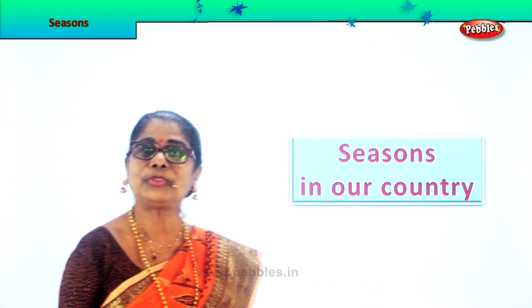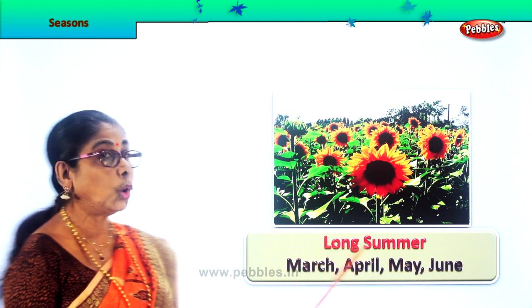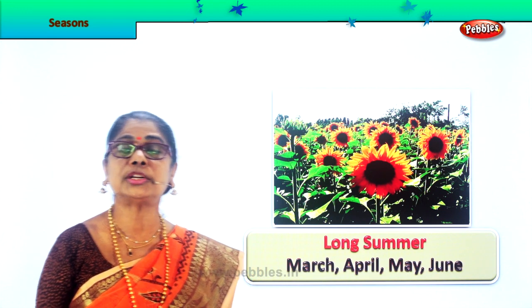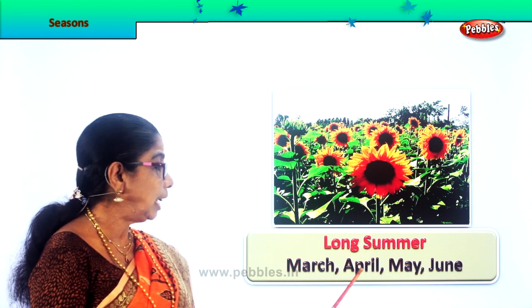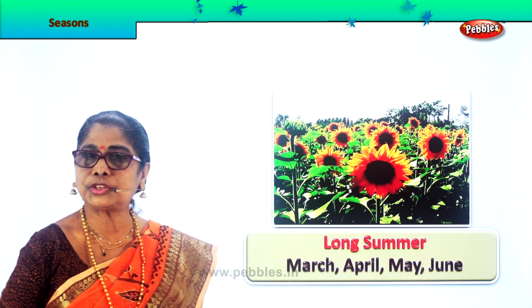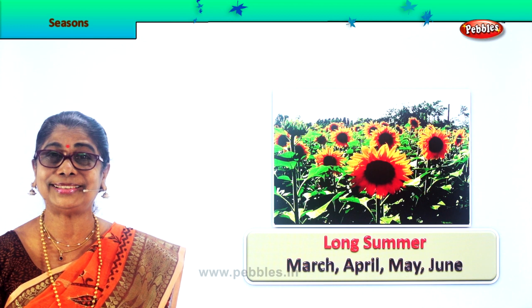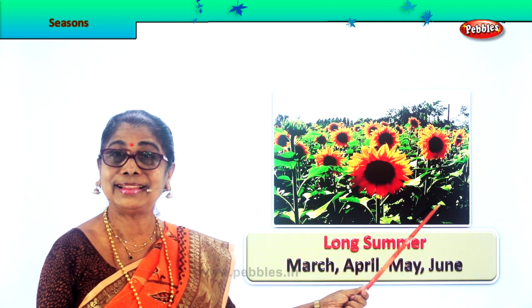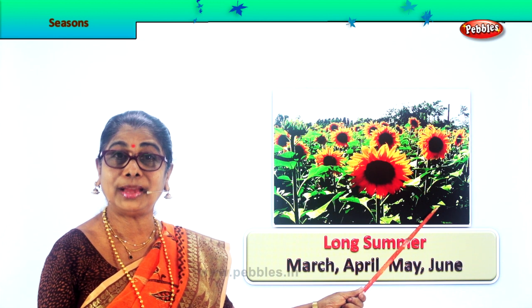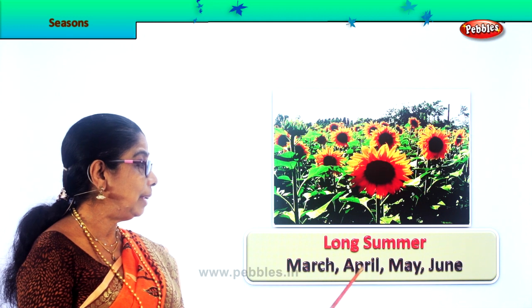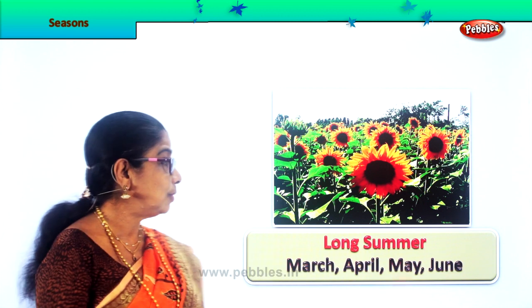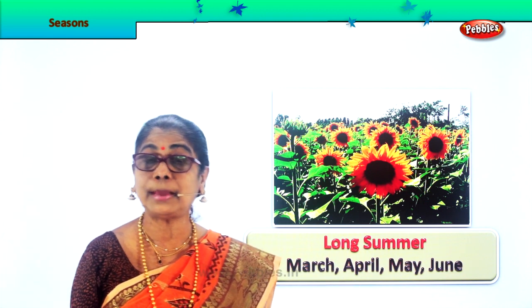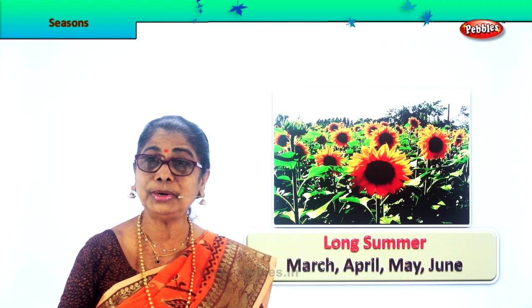Let's look at the seasons in our country. First, we begin with long summers. We always have a long, hot summer season, and that comes in the months of March, April, May, June. By the time it is March, it gets hot. But you see flowers everywhere — the gardens and fields are full of flowers. People enjoy the flowers, with butterflies and birds hopping around the garden. We always have a long summer from March to June, when school reopens.